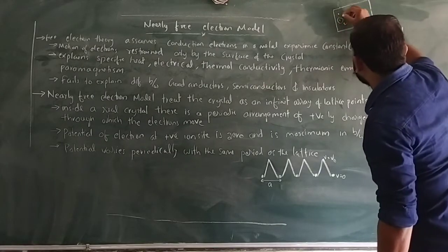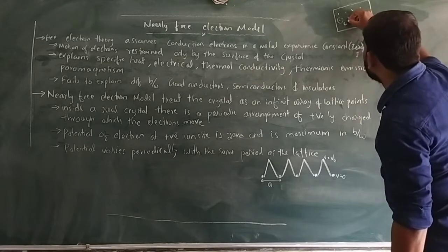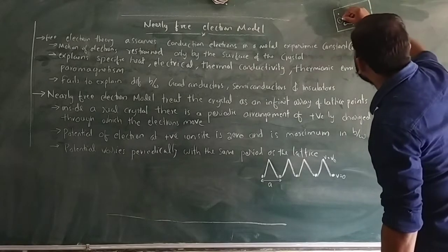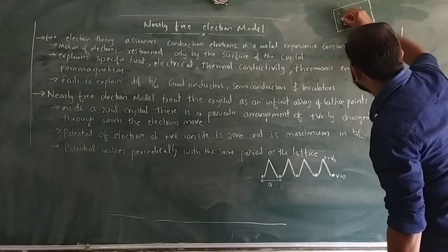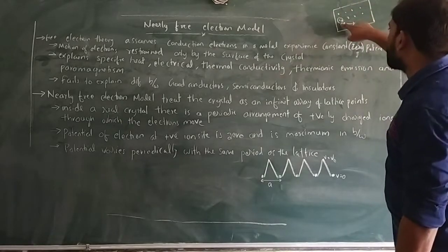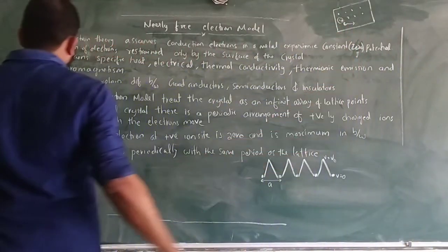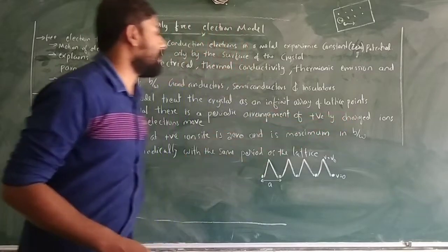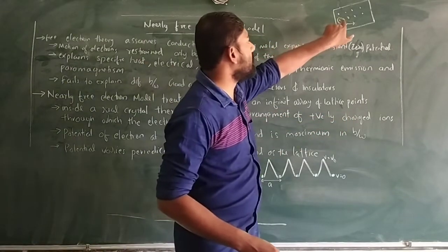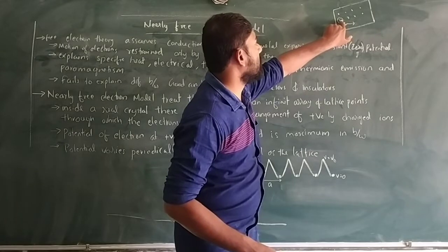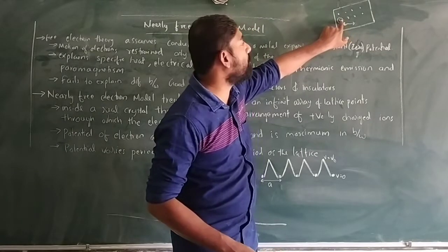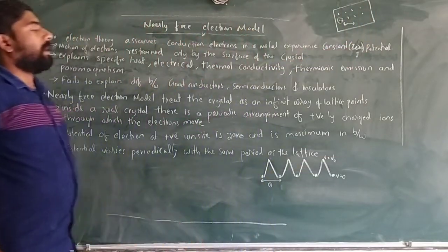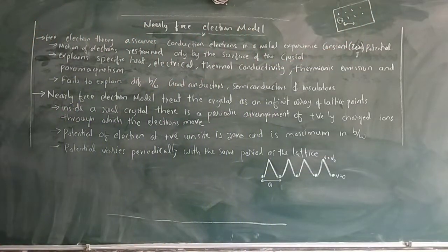When an electron gets free from its orbital, it moves away, and the charge of the ion site becomes positive. So we call these positive ion sites. Inside the real crystal, there is a periodic arrangement of positively charged ions. After the electron leaves, these arrangements form a lattice of positive ion sites, and all ion points are positively charged.